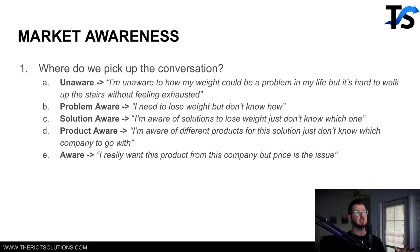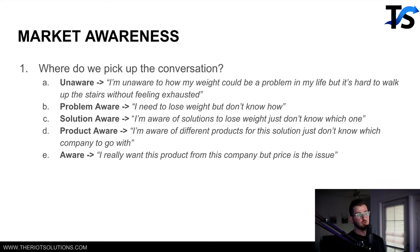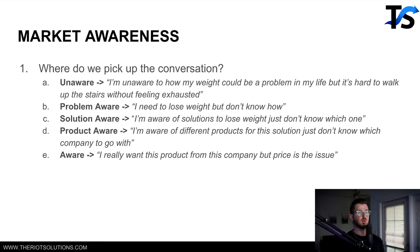Unaware means they're totally unaware of the problem — you have to convince someone they have a problem before you can talk about it. Problem aware means you can specifically talk about the problem and lead them into the solution, but they don't know the solution yet. Solution aware means they're aware of solutions — like losing weight — and know the outcome they want, but don't know which solution is best. Product aware means they already know your product but aren't sure if you're the best fit, so you sell on why your business and product is best. Finally, most aware means they really want the product but price is the issue — that's where a discount comes into play.